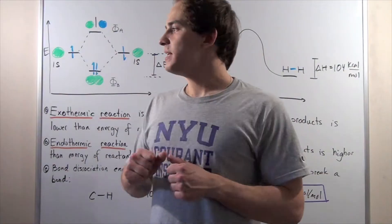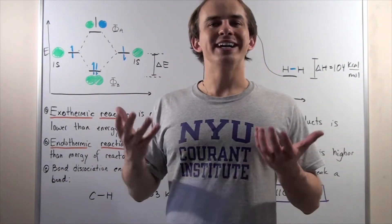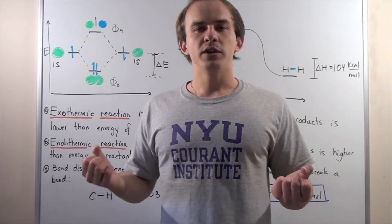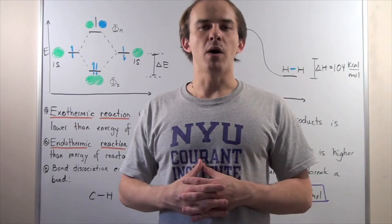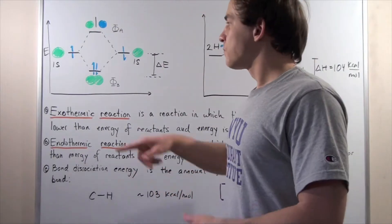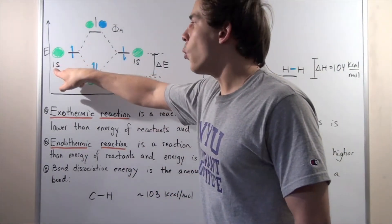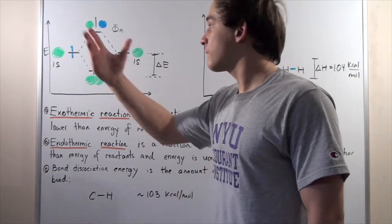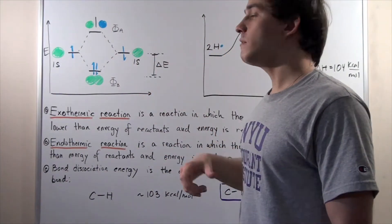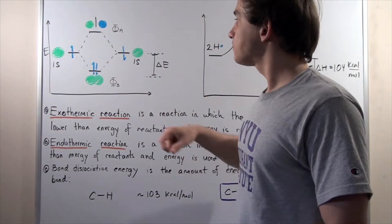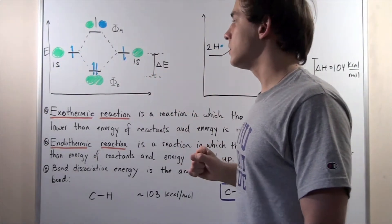Let's begin by looking at the following diagram. We're basically taking two identical H atoms and combining them to form a diatomic H₂ molecule. Here are our two identical H atoms — this is the 1s atomic orbital of the first H atom and the 1s atomic orbital of the second H atom. We have an electron in each atomic orbital.